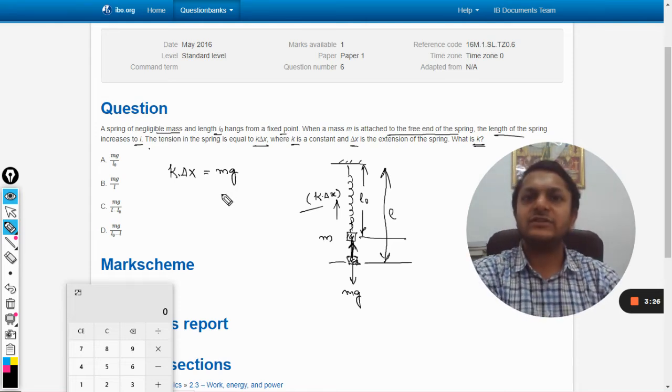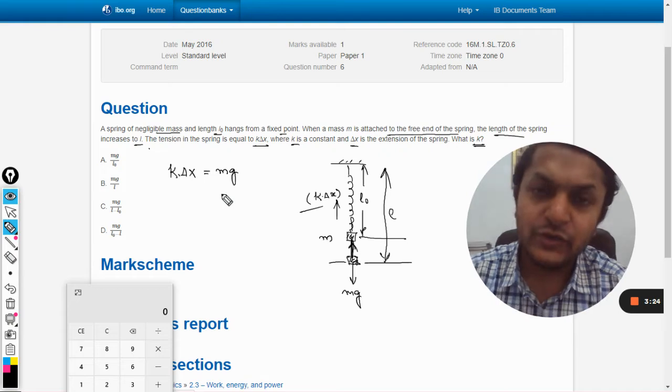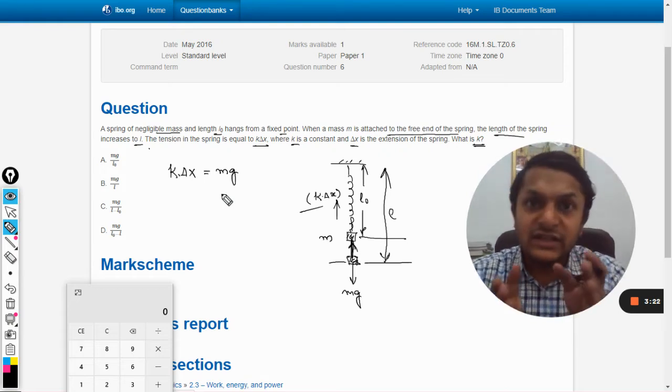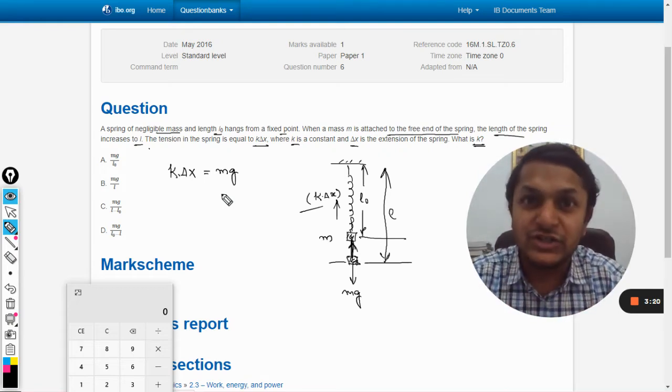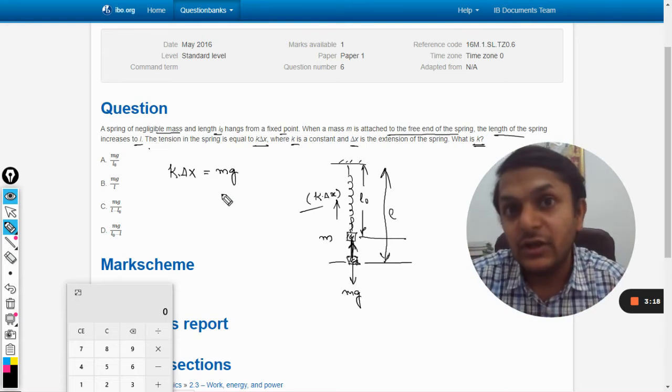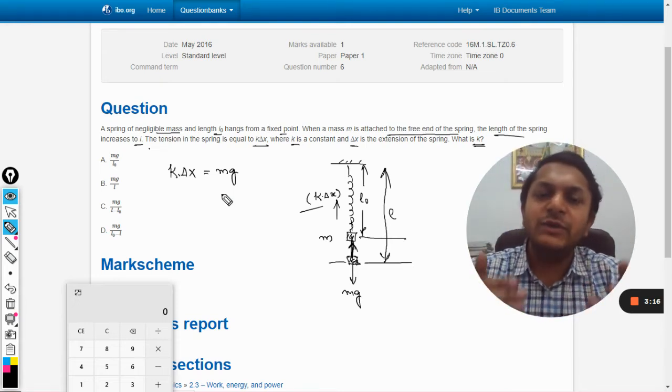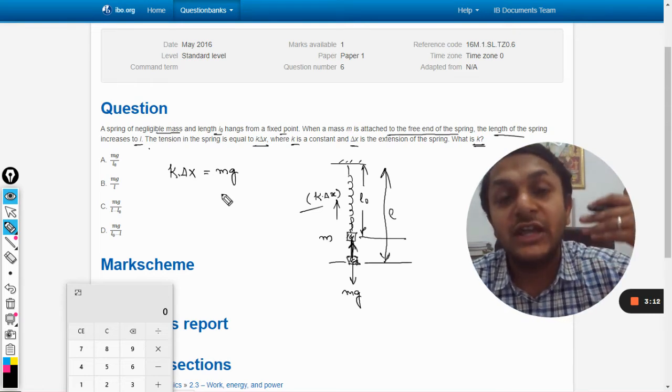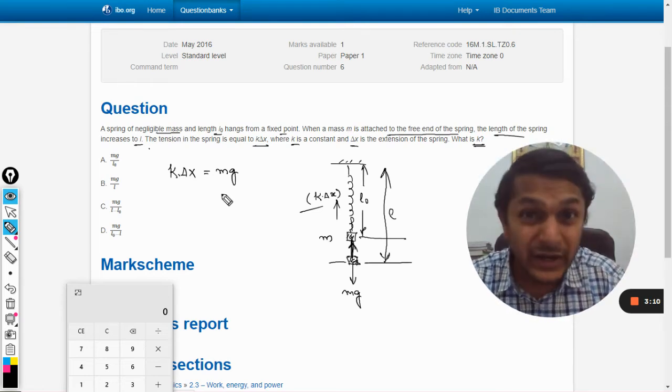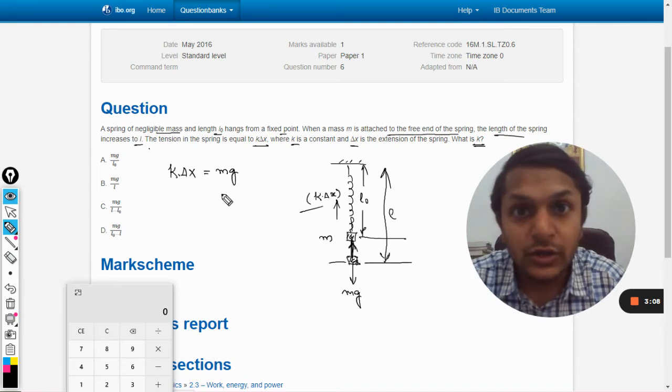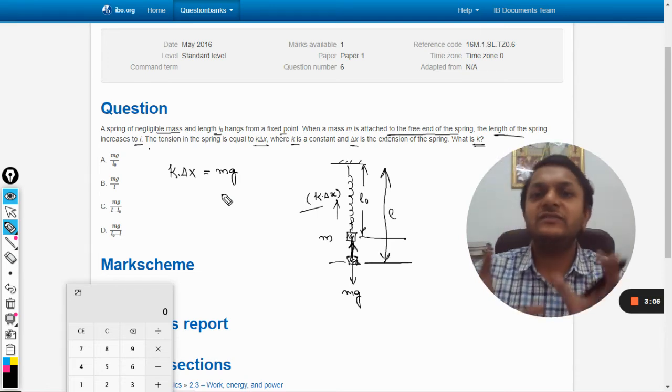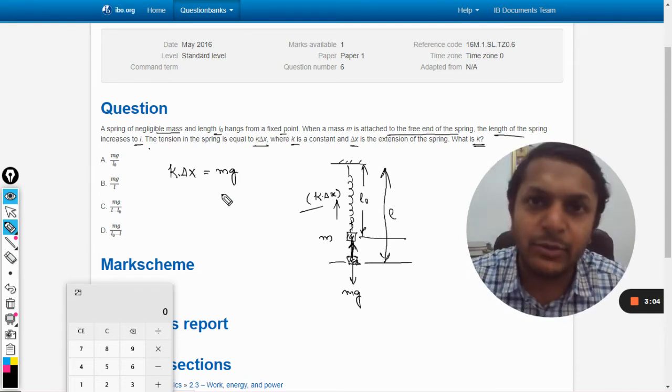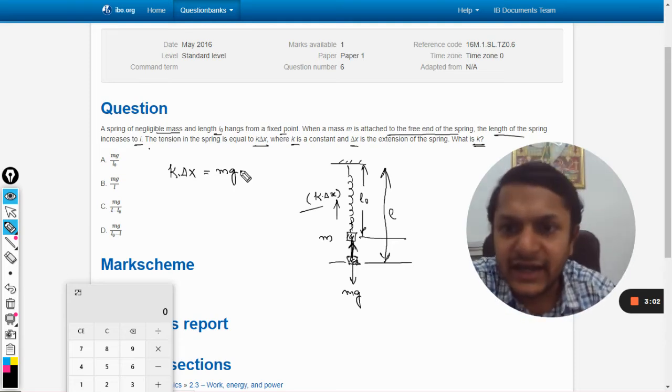Usually this thing always happens. Think from that point of view: there is a translatory equilibrium here. Neither the block is moving downwards nor going up. Although the block is being acted on downwards by weight and pulled upward by the spring, the block is not moving in either direction. So it means both forces are equal and opposite, so mg equals k delta x.